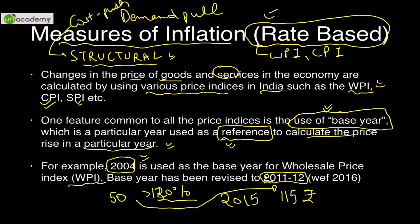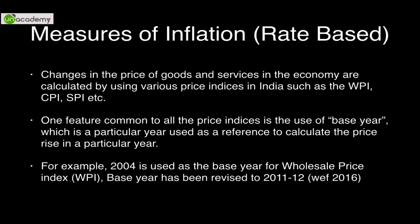A base year is chosen because it is the standard norm — it should not have any drastic disturbances. For example, you cannot choose a year that had drought, low monsoon, tsunami, or earthquake that disturbed macroeconomic indicators. Other features of base years will be covered when we discuss fiscal policy.